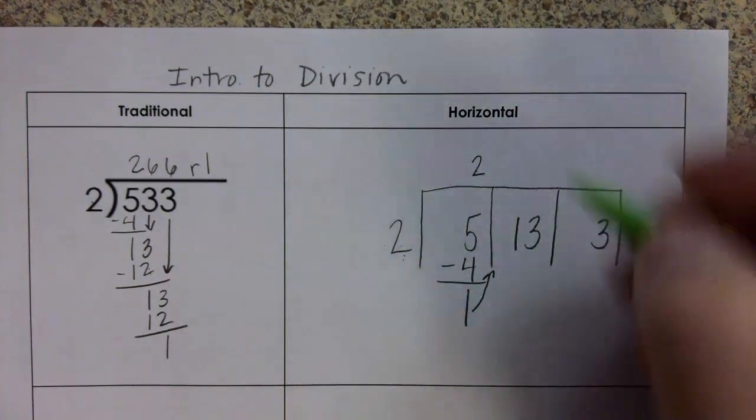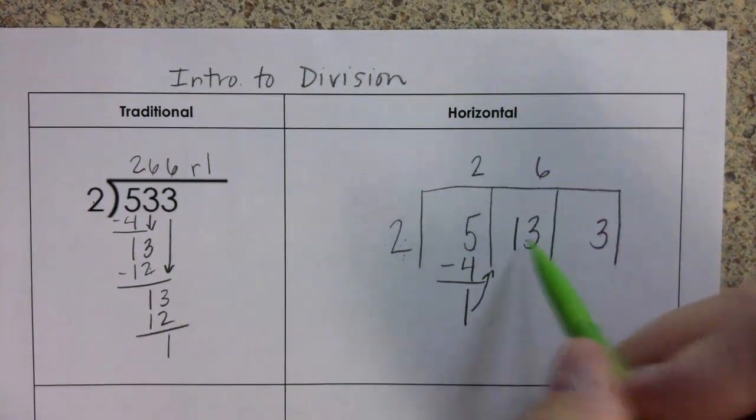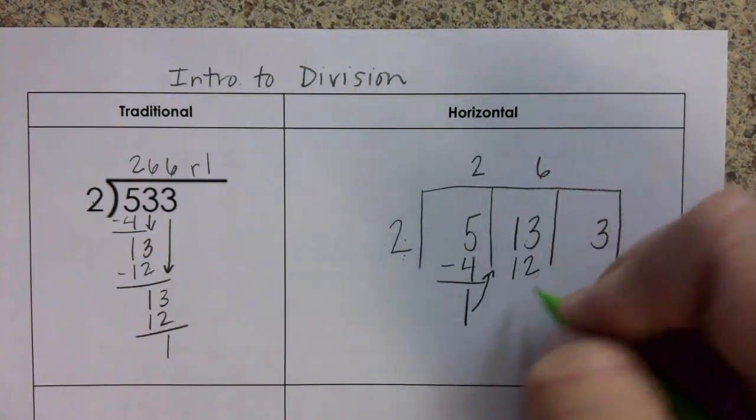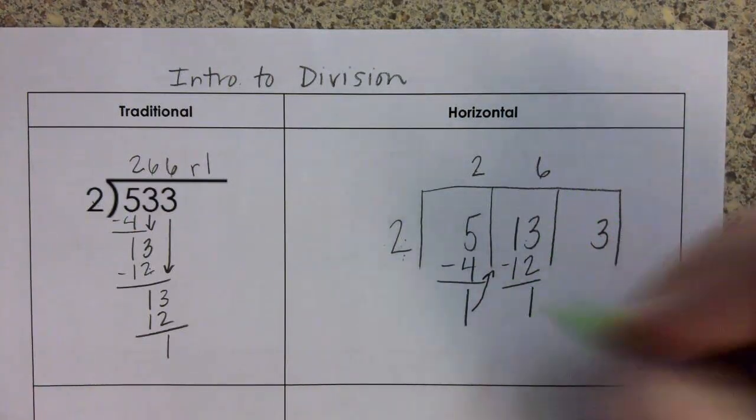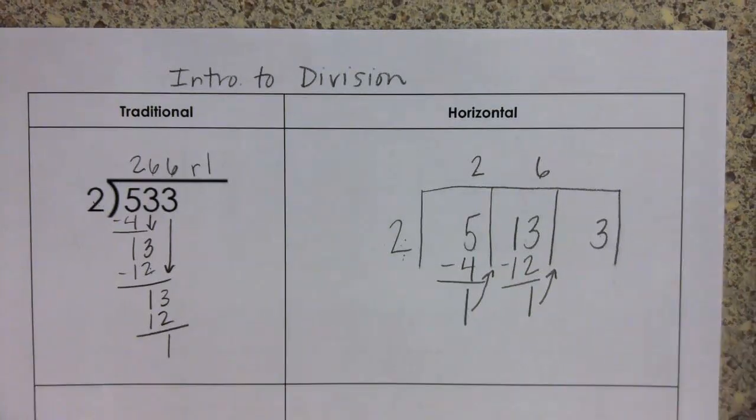How many 2's can go into 13? 6 of them. 6 times 2 is 12. We write the 12 underneath. We subtract. We get a 1. That 1 again comes up to join the 3.